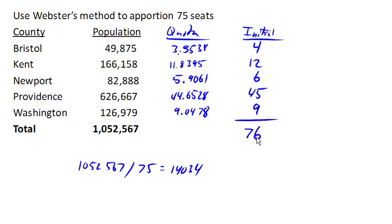That is too large, so we're going to have to adjust our divisor to make that number smaller. That means we're going to have to make our divisor bigger. Let's increase our divisor to maybe 14,100.